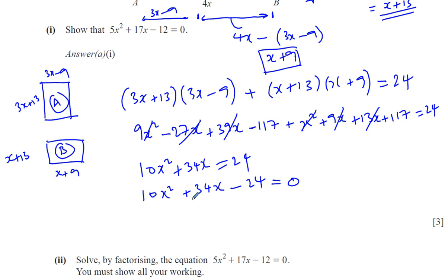And we can see that each of these terms are divisible by 2. So you're going to have 10 divided by 2 is 5, so you've got 5x squared, 34 divided by 2 is 17 plus 17x, and 24 divided by 2 is 12. And there we have it. We have now answered part 1 of this question. I'm going to just stop the video and I'll do the next one on part 2.